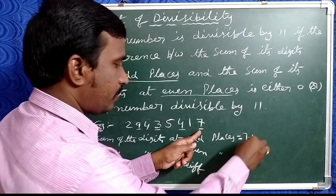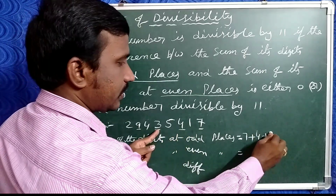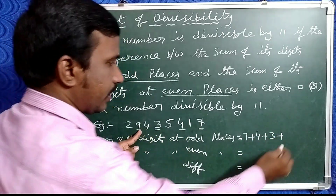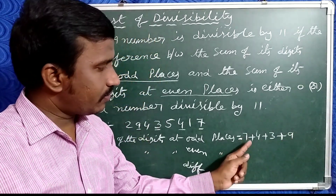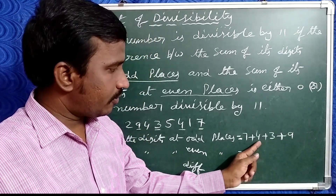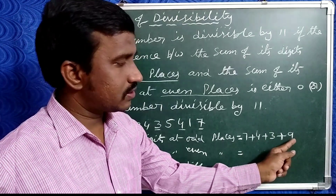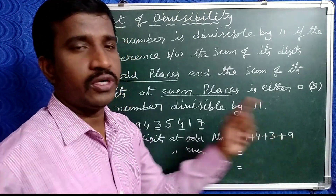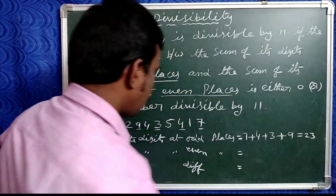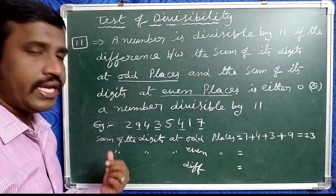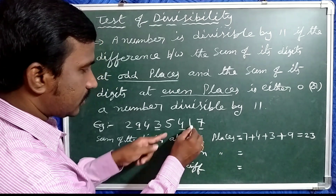The odd place digits are 7, plus 4, plus 3, plus 9. So 7 plus 4 is 11, 11 plus 3 is 14, 14 plus 9 is 23. So the sum of odd place digits is 23. Now add the even place digits.